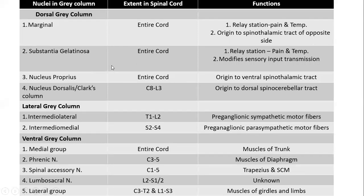Here is a table showing the names of the nuclei present in the different gray horns, their location or extent in the spinal cord, and their functions. Starting with the dorsal gray column: the posteromarginal nucleus is present at the tip of the dorsal horn, extends over the entire cord, and is a relay station for pain and temperature. It also gives rise to the spinothalamic tract of the opposite side.